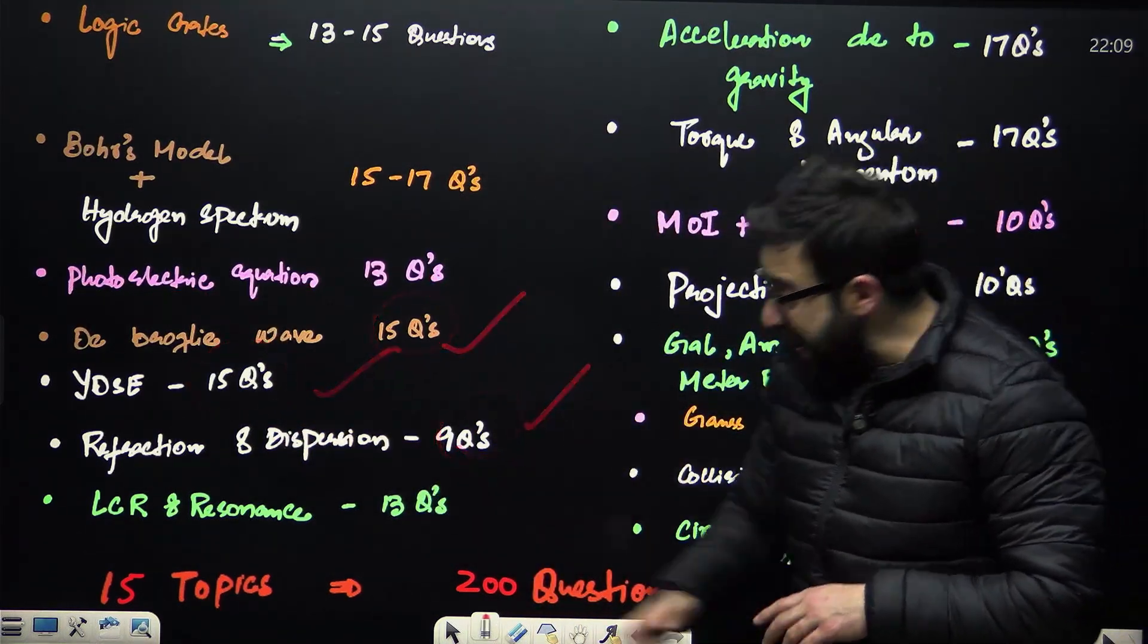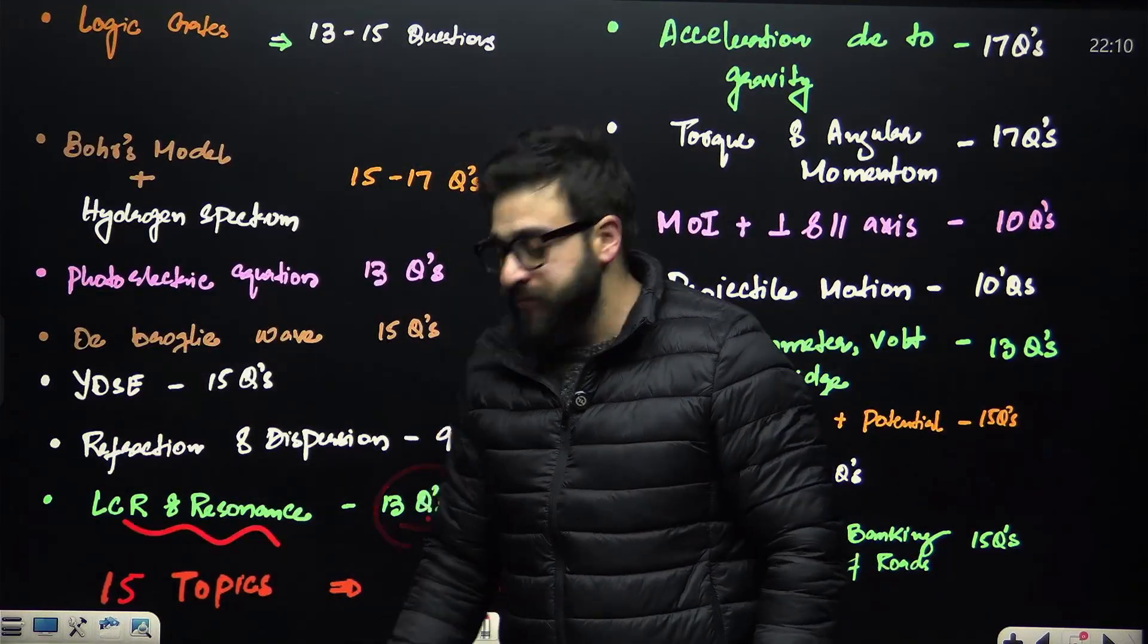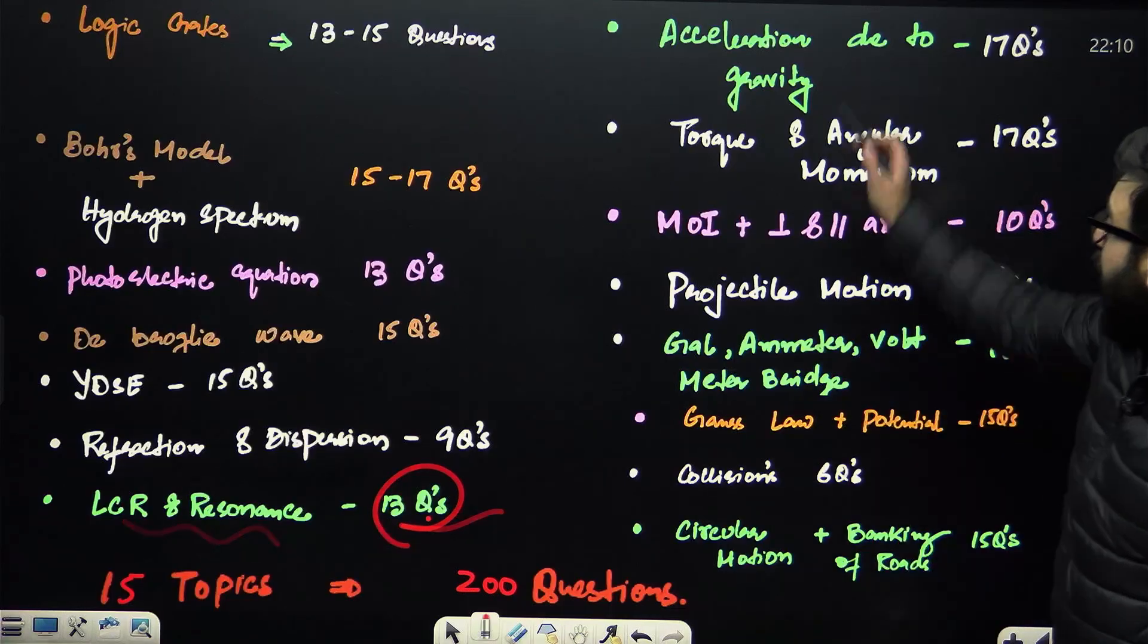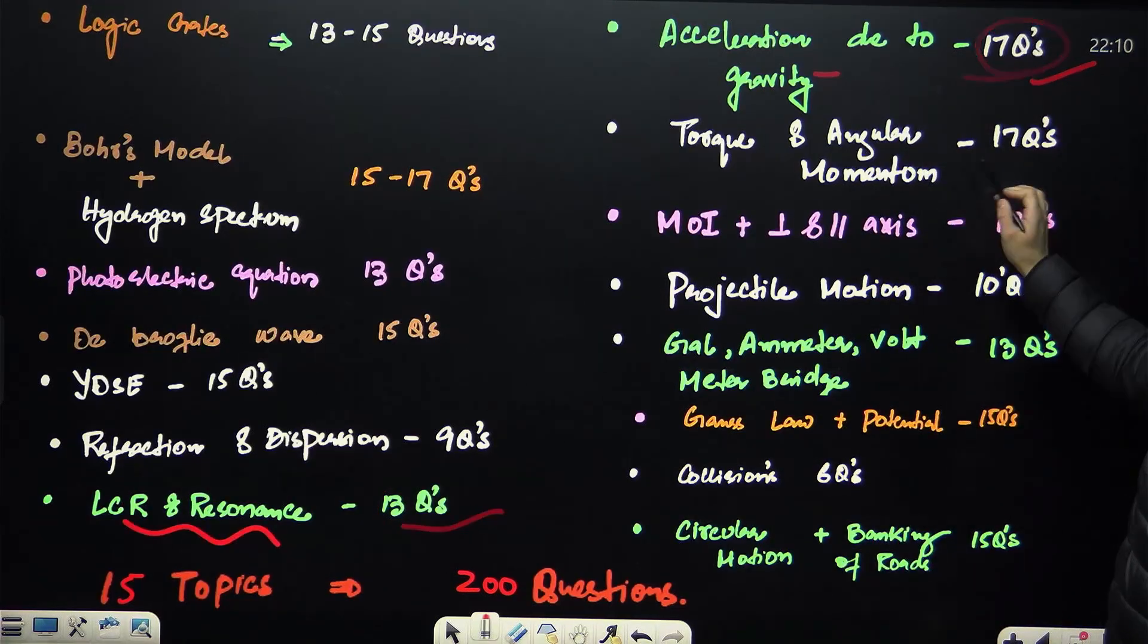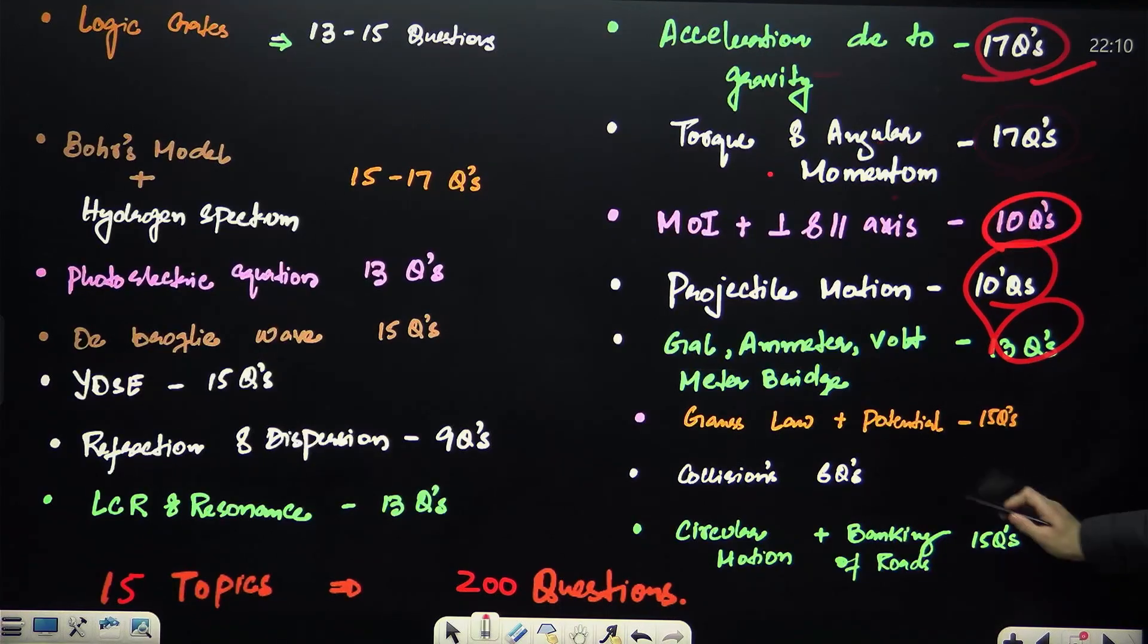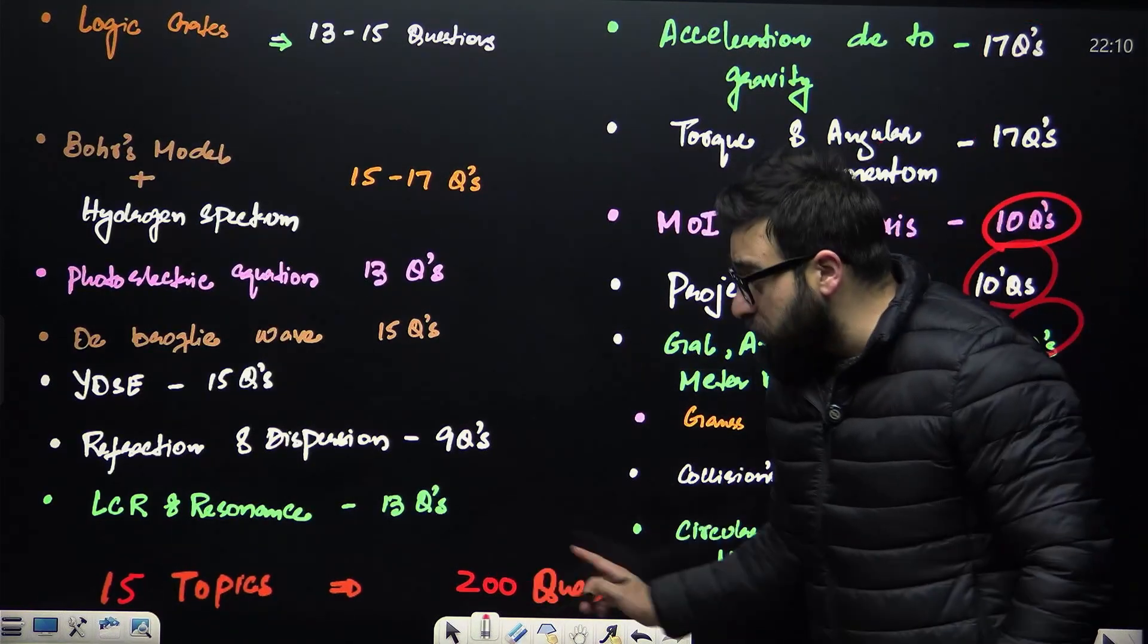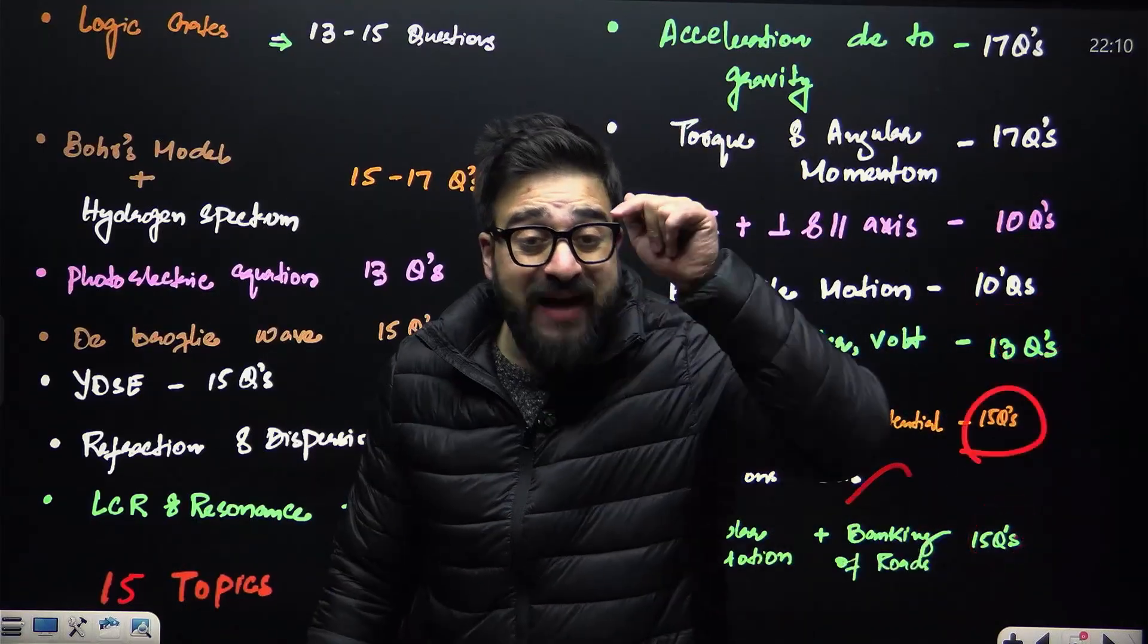Refraction dispersion, 9 questions. LCR resonance, 13 questions. Hardly it requires 20 minutes to complete this particular topic. See, 13 questions. And acceleration due to gravity, 17 questions. We say 17 questions. Torque and angular momentum, 10 questions. 10 questions, 13 questions, 15 questions, 6 questions, 15 questions. So we say total of 200 questions from just 15 topics, that too from just seven chapters.